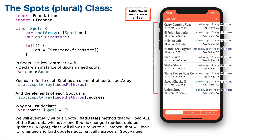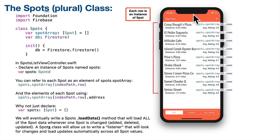We've got a view controller that shows all of our spots or restaurants in a table view - that's our spot list view controller. But instead of a variable that holds an array of spot objects, we're going to create a separate Spots plural class that contains a spot array. We're going to write a single load data method in this class that will listen for any changes in any of the individual spot documents in our spots collection.